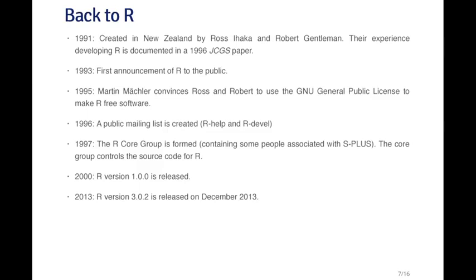So what is R about? R is a relatively recent development — created in 1991 in New Zealand by two gentlemen named Ross Ihaka and Robert Gentleman. They talked about their experience developing R in a paper published in 1996 in the Journal of Computational and Graphical Statistics. In 1993, the first announcement of R was made to the public. In 1995, Martin Meckler convinced Ross and Robert to license R under the GNU General Public License, which made R what we call free software.